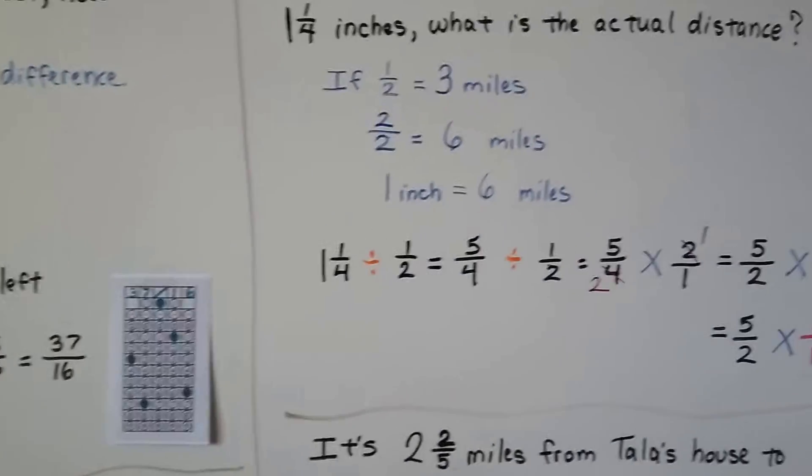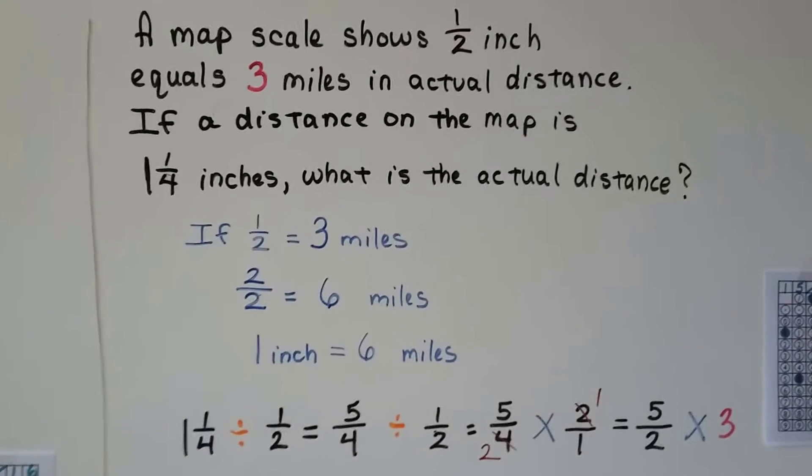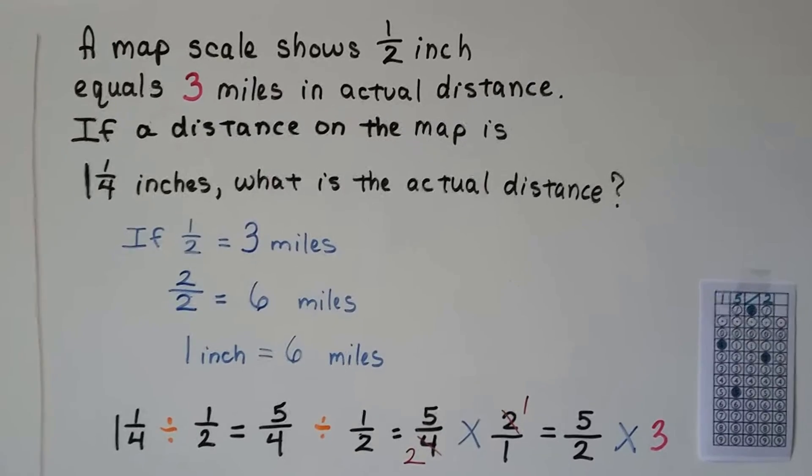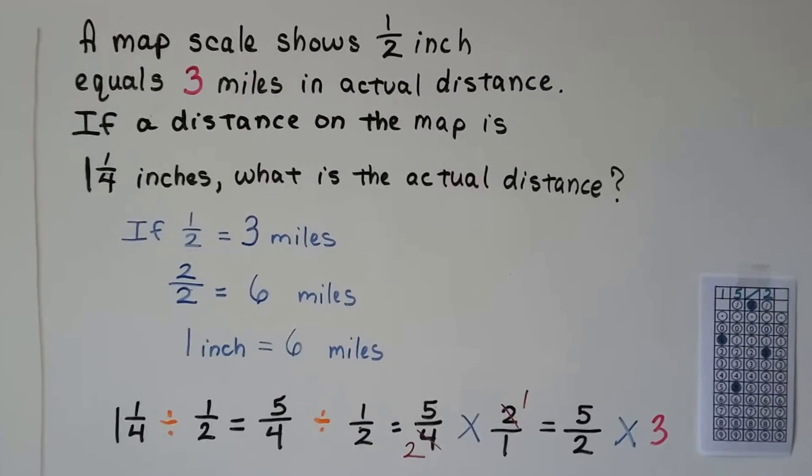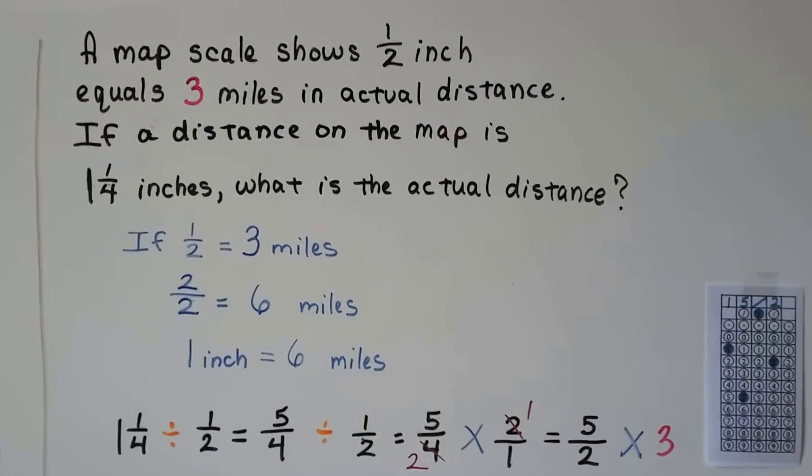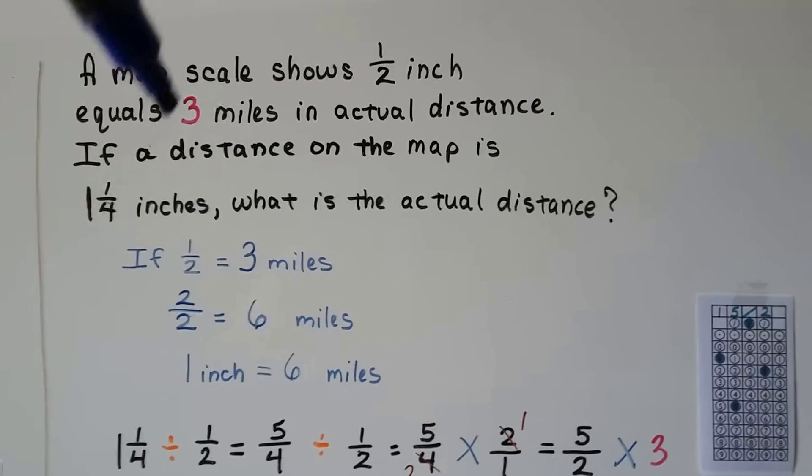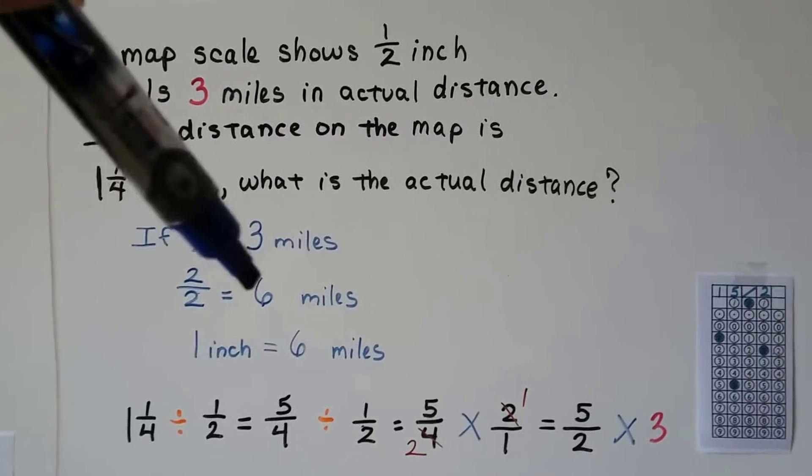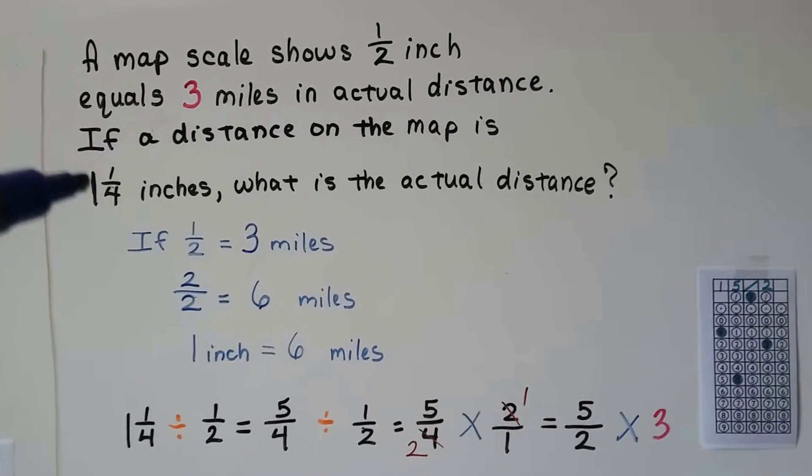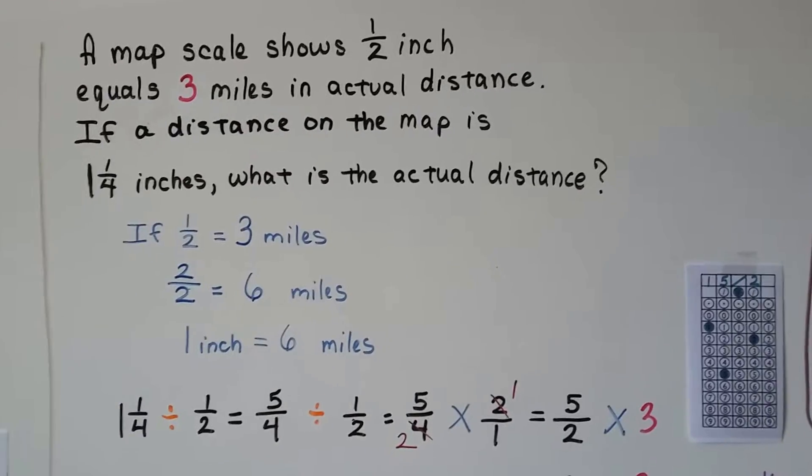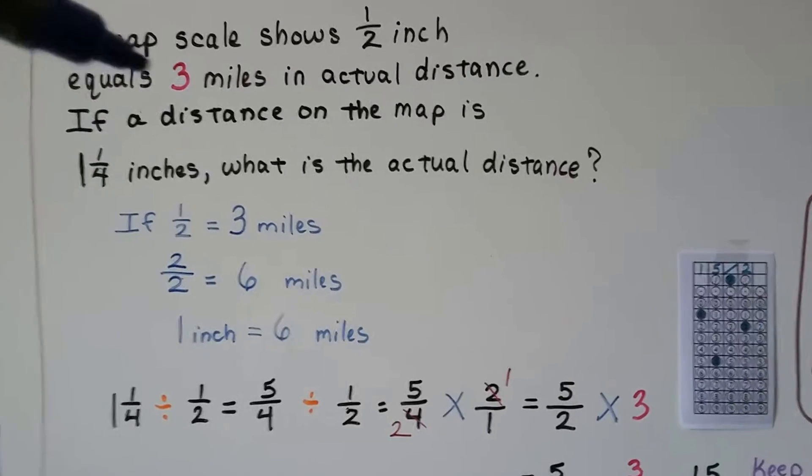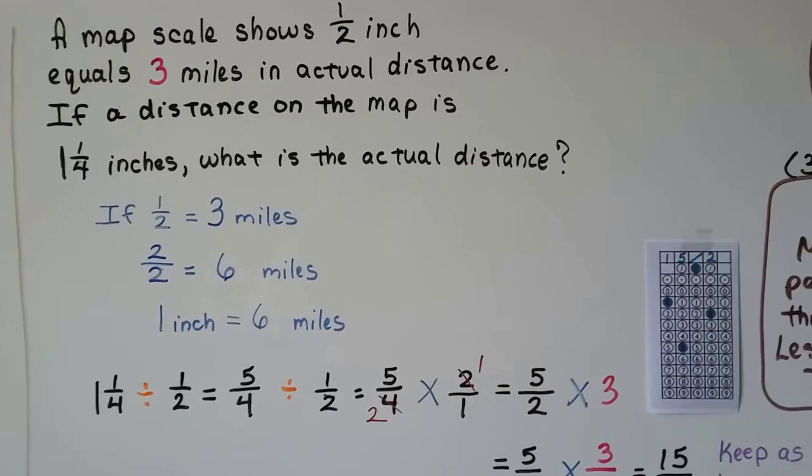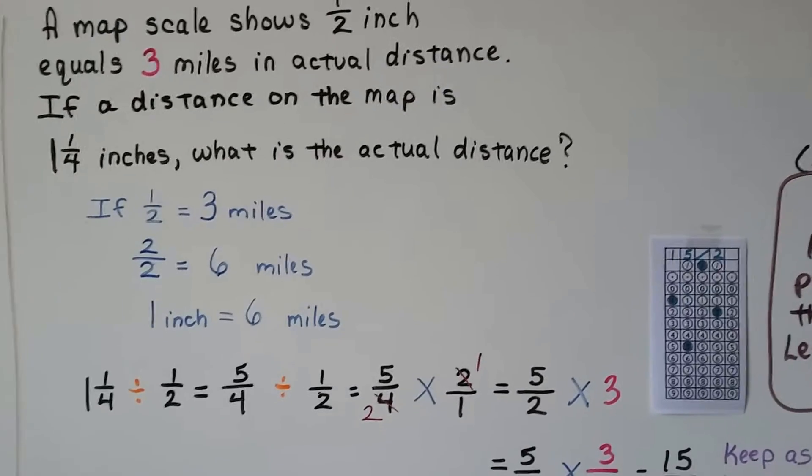This one says a map scale shows half inch equals three miles in actual distance. If a distance on the map is 1 and 1/4 inches, what's the actual distance? If we look at this from a basic point of view, if a half inch is three miles, then a whole inch must be six. But we need not just one inch, we need 1 and 1/4 inches to find the actual distance. So we can take this 1 and 1/4 and divide it by that half, come up with a quotient, and then multiply it by that three.